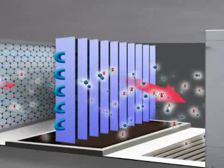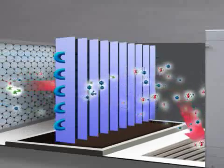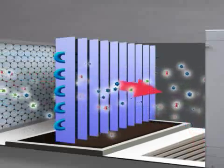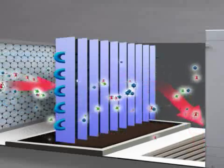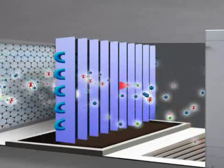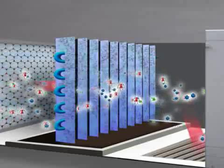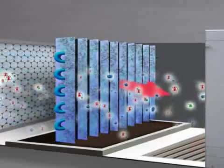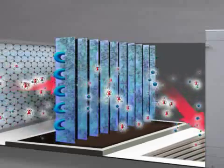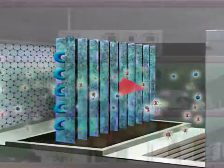When warm air passes through the cold coils, it creates moisture, so the damp, dark space inside the coil is a perfect environment for growing mould and bacteria.